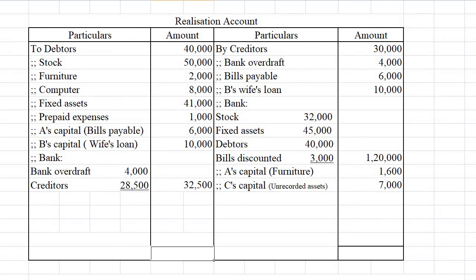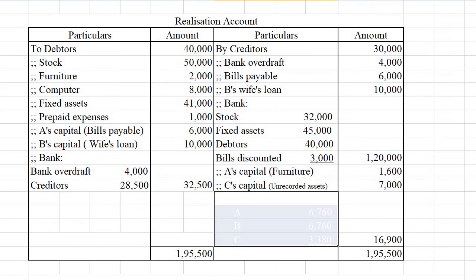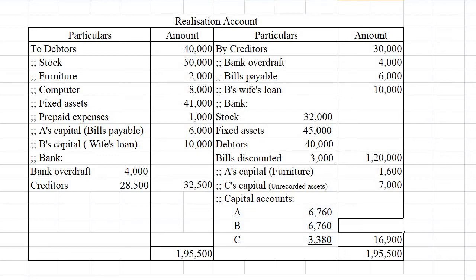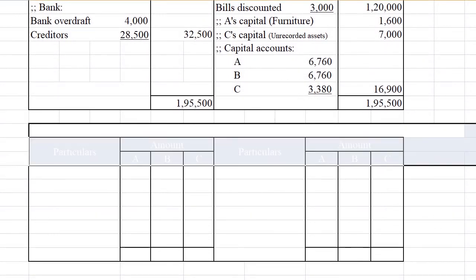All entries in the realization account are now complete. The debit side shows more amount. Totaling both sides gives rupees 1,95,500, resulting in a balance of rupees 16,900. This is a loss on realization of assets and liabilities, which will be transferred to the partners' capital accounts in their profit sharing ratio of 2:2:1.